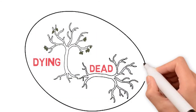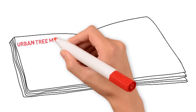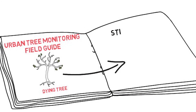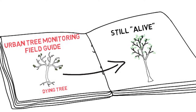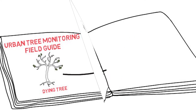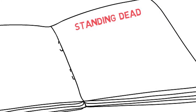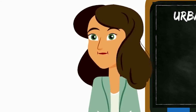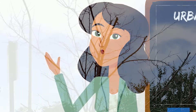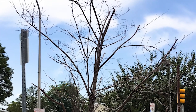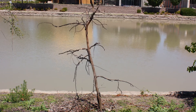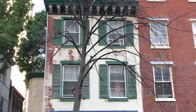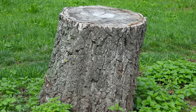In our urban tree monitoring field guide, we purposefully consider dying trees to still be alive, because sometimes those very unhealthy trees can bounce back in the next season. A tree is not categorized as standing dead until it is all the way dead — no green leaves, no live buds, no green tissue under the bark. Standing dead trees should also have an intact trunk and be more than a foot tall.